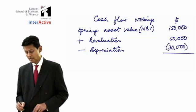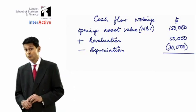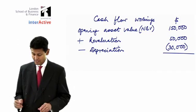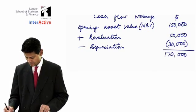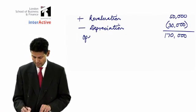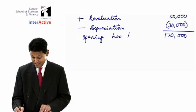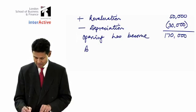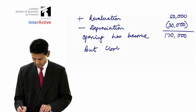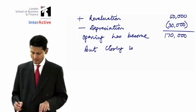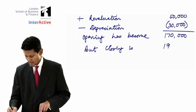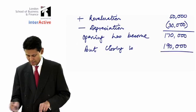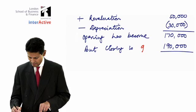So if you add it up: 150 plus 50 is 200, minus 30 is 170. So the opening has become 170, but the closing is perhaps 190 — and that of course will be given by the examiner, just as these other figures will be given.